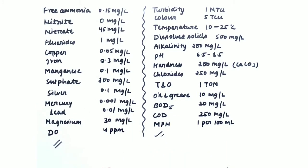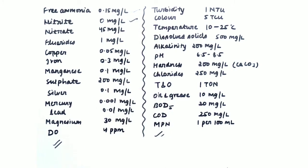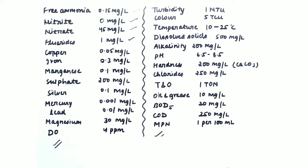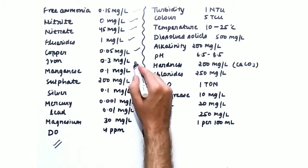Free ammonia has a permissible limit of 0.15 mg per liter. Nitrite cannot be tolerated at all — not even 0.001 mg per liter; it should be completely absent, 0 mg per liter. Nitrate is 45 mg per liter. Fluoride is 1 mg per liter. Copper is 0.05 mg per liter. Iron should be 0.3 mg per liter.